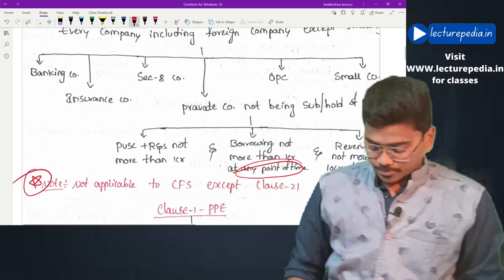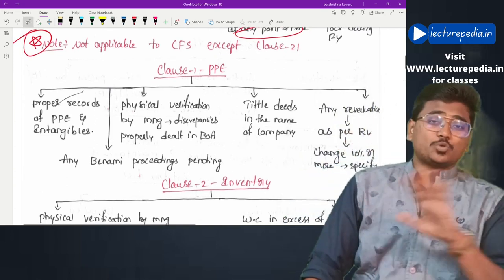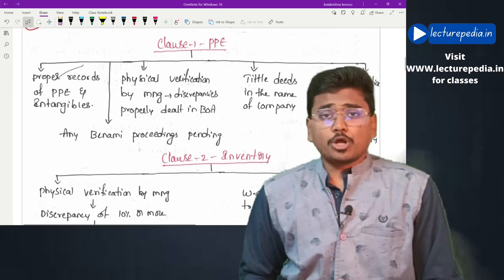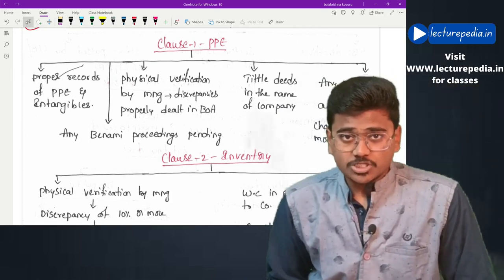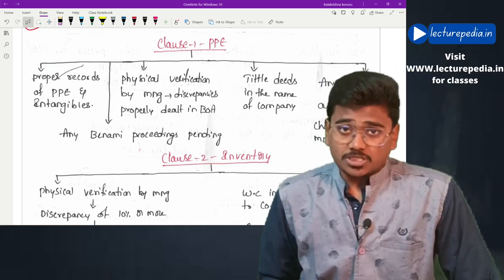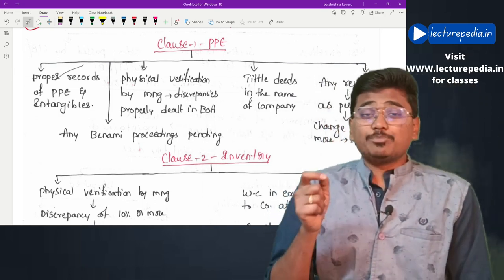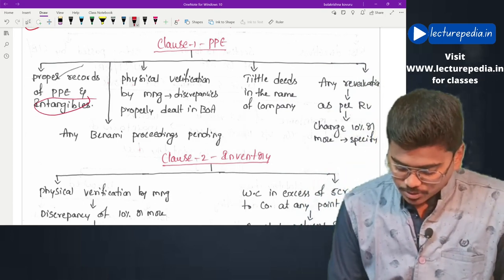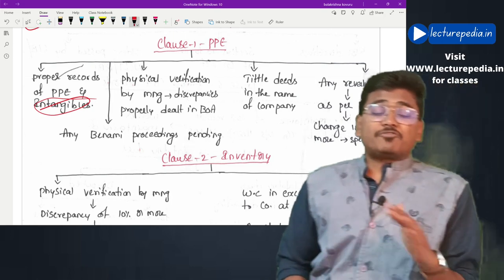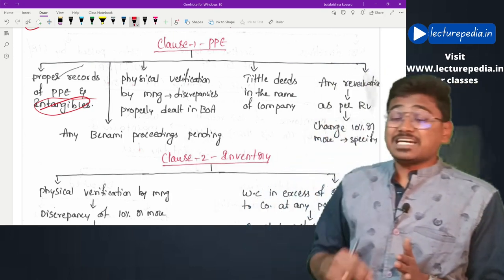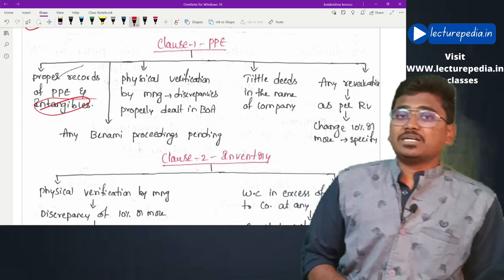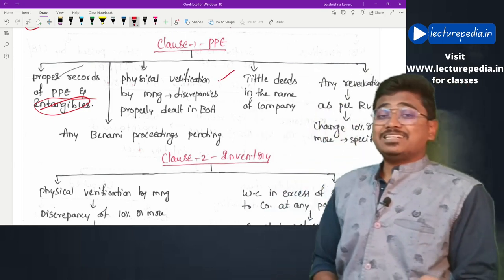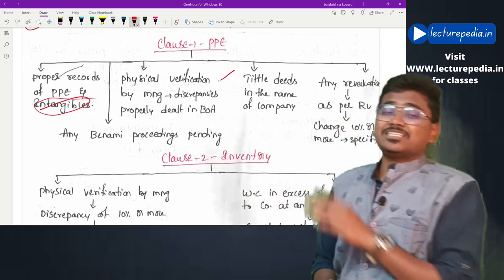There are 21 clauses, each dealing with a separate aspect. Clause 1 covers property, plant and equipment. The auditor has to report whether management is maintaining proper records relating to property, plant and equipment and also intangibles. The auditor also has to check whether management is conducting physical verification of these assets at reasonable intervals, and whether any discrepancies noticed during such verification have been properly dealt with in the books of accounts.